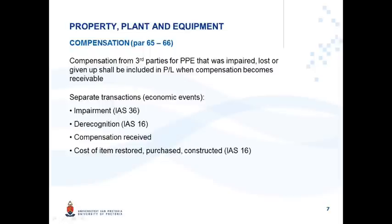Paragraph 65 to 66 dealing with compensation from third parties identifies that impairment of an asset, the derecognition of an asset, compensation received from a third party, and the cost of a new item being purchased or constructed — all of these represent separate economic events that need to be disclosed separately.